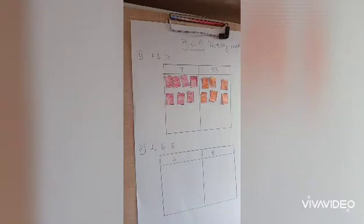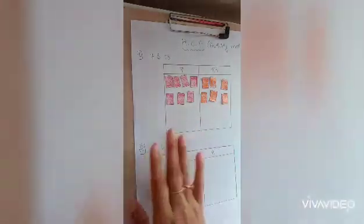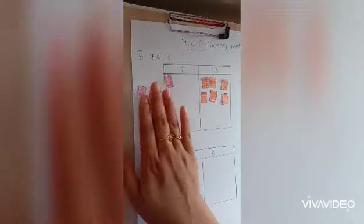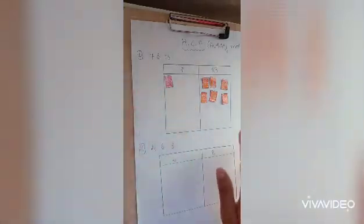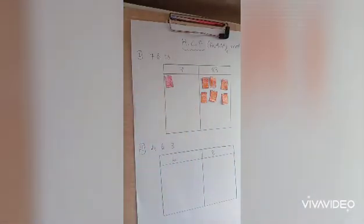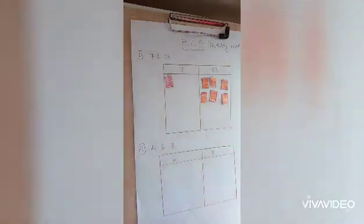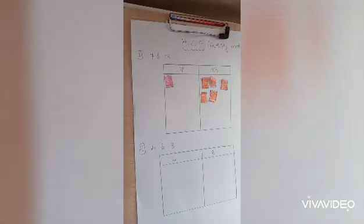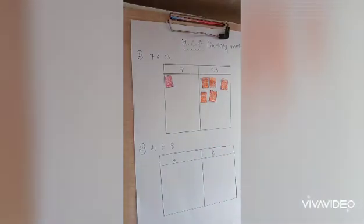Now between seven and six, which is the smaller number? Six. So from the larger number — seven — I have to remove six strips. Now I am left with one here and six there. Between one and six, one is the smaller number, so I have to remove one strip from the bigger number. Again, one and five — one is smaller, so remove one from five.